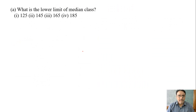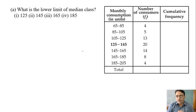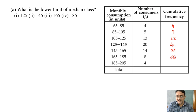The first question: what is the lower limit of the median class? We have to find the cumulative frequency first. The first cumulative frequency is 4, next 9, next 22, next 42, next 56, next 64, and last 68. So our total frequency is 68.